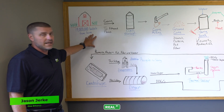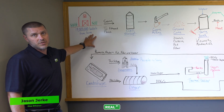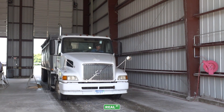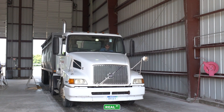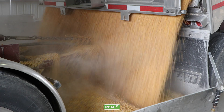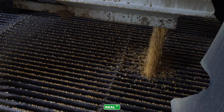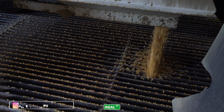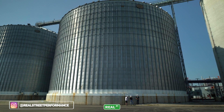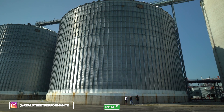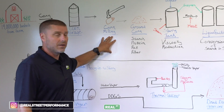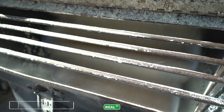We buy 19 million bushels a year at this production facility. It's brought to the facility by the farmer, where it is tested for quality control to make sure that it meets our quality standards. That corn is then stored in a silo until it's ready for processing.